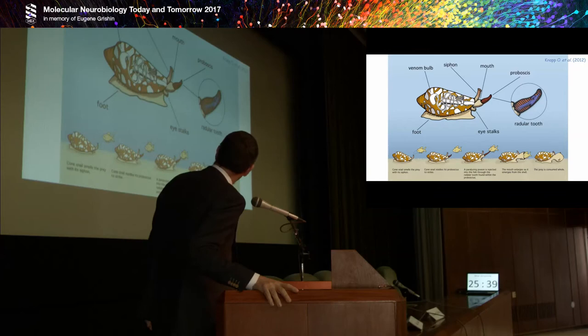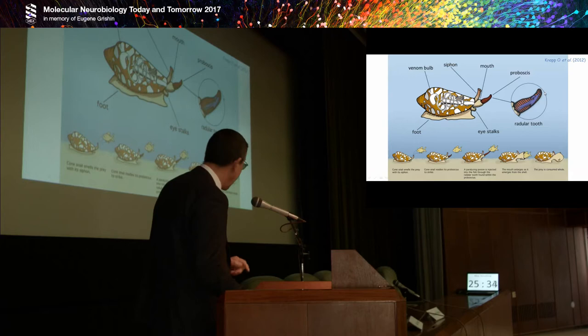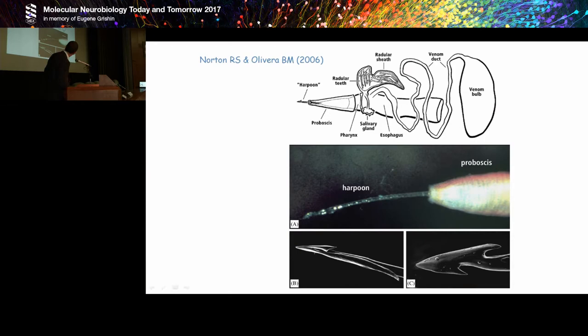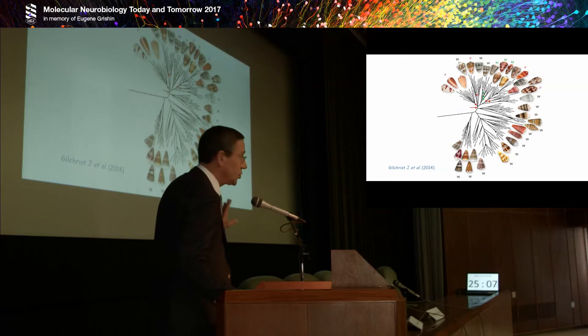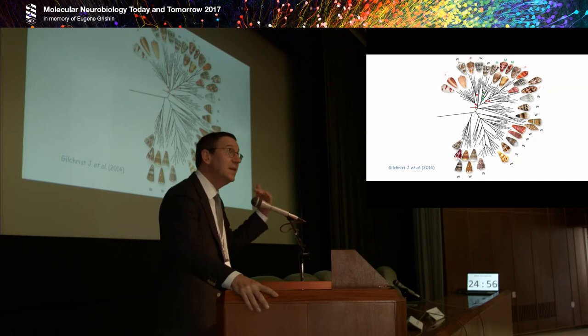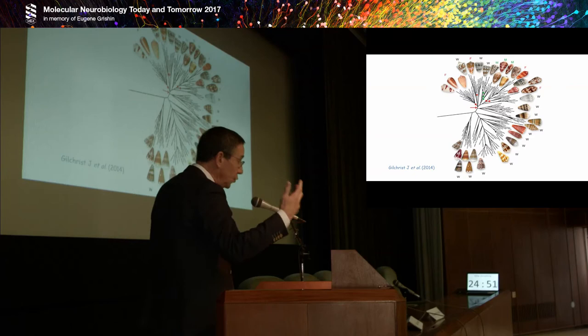As toxinologists and scientists, we are interested in this beautiful animal with the venom bulb on one hand and the proboscis on the other. Here is a schematic representation: the venom bulb and the proboscis with beautiful pictures of a harpoon-like mechanism, a needle-type instrument via which all the toxins and venom is injected. This phylogenetic tree shows that several cones hunt on worms, sometimes on fish or on mollusks, and this is reflected in the pharmacology and discovery of peptides for drug development.